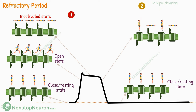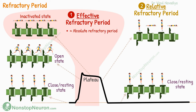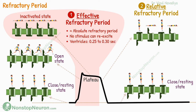There are two types of refractory periods: effective refractory period and relative refractory period. The effective refractory period is seen during most of the plateau phase, and it is the same as the absolute refractory period seen in nerve and skeletal muscles. During this, no stimulus can re-excite the cells, because the sodium and calcium channels are in the inactivated state and cannot be opened directly. The duration of the absolute refractory period in ventricular muscles is 0.25 to 0.30 seconds, and in atrial muscles it is comparatively shorter, at about 0.15 seconds.